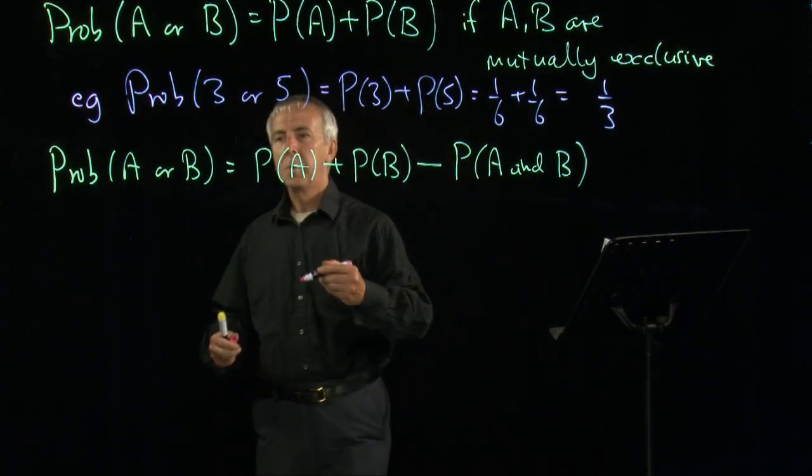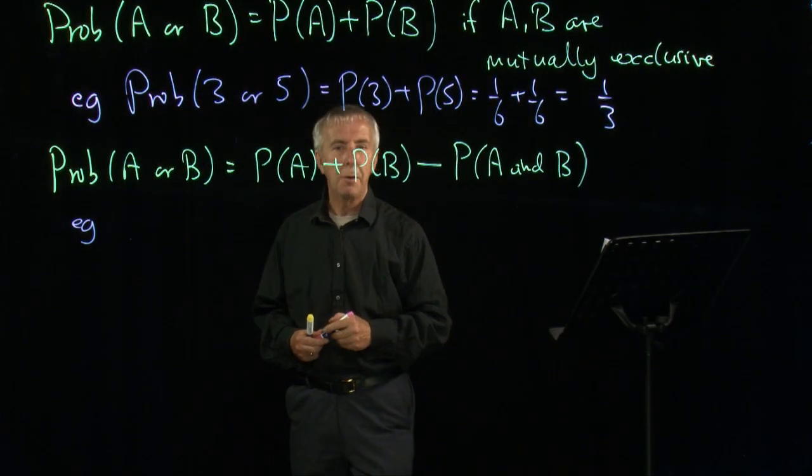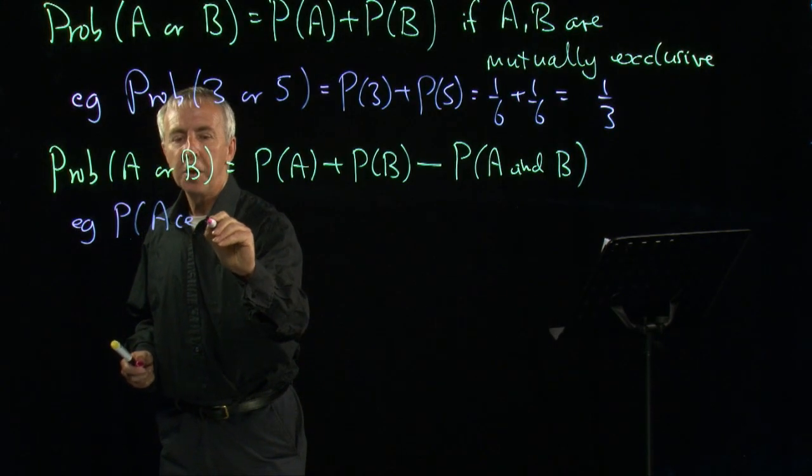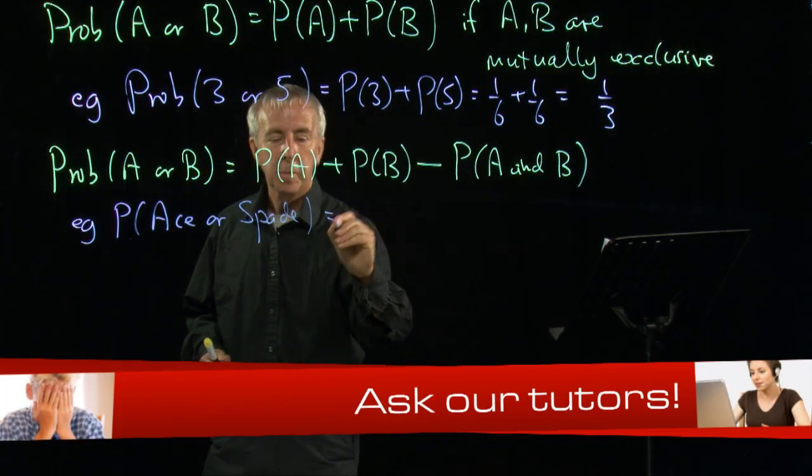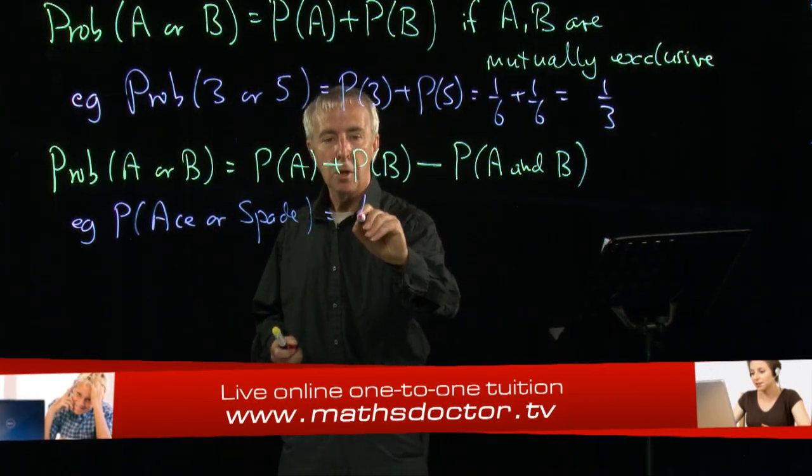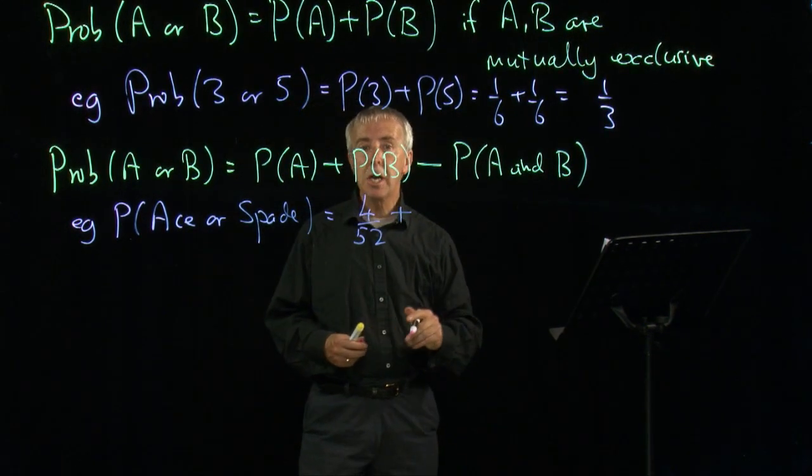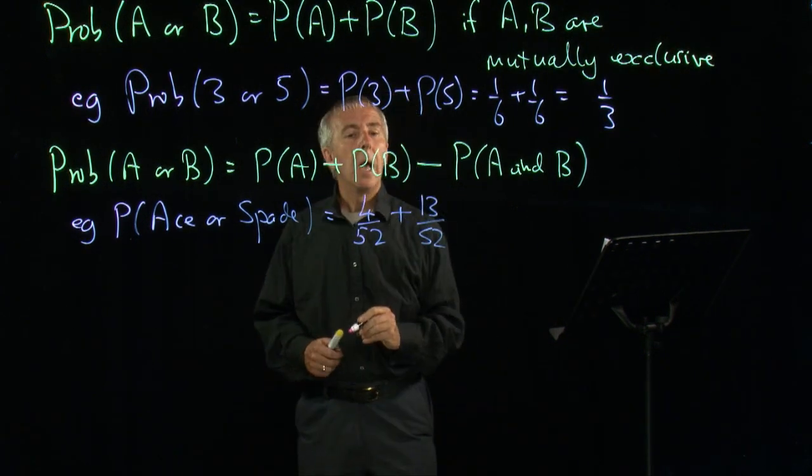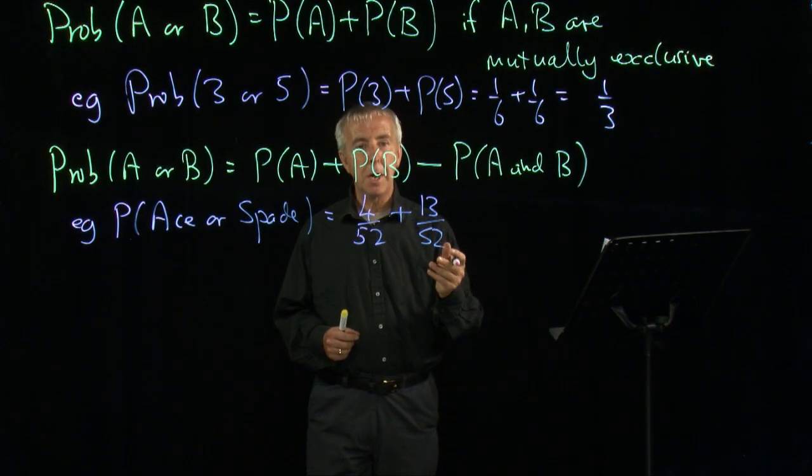So for example, if I wanted to find the probability, when I select a card from a pack, what's the probability of an ace or a spade? The chance of an ace is 4 out of 52, because there are four of them. Spades, there are 13 out of 52.